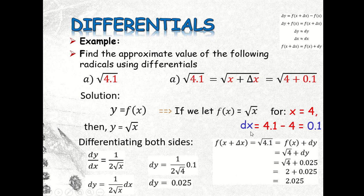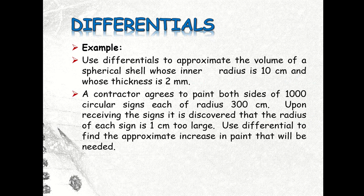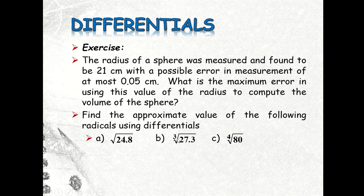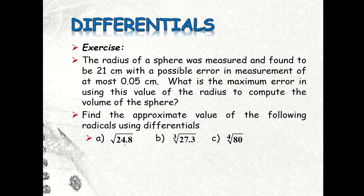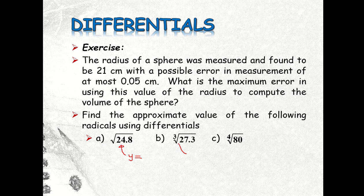I hope you understand this. Now try the remaining problems. For item b — square root of 24.8 — your y should be a function of x equal to square root of x, and you must choose x as a perfect square that is close to 24.8. That value will be your starting point.